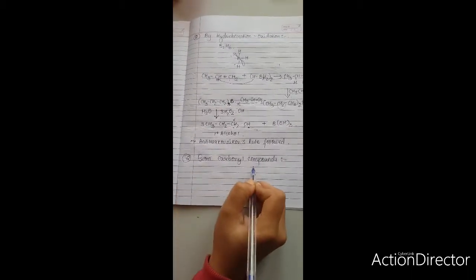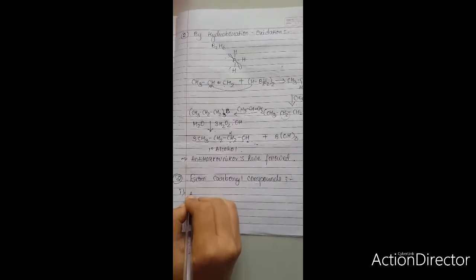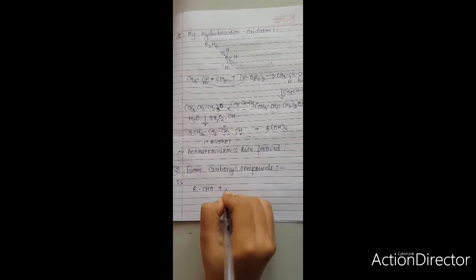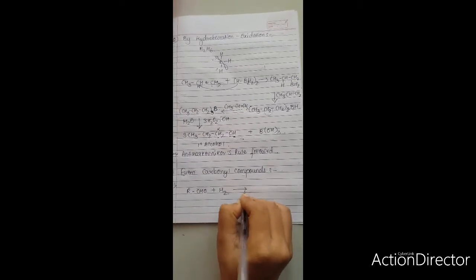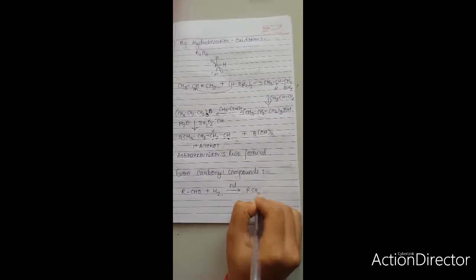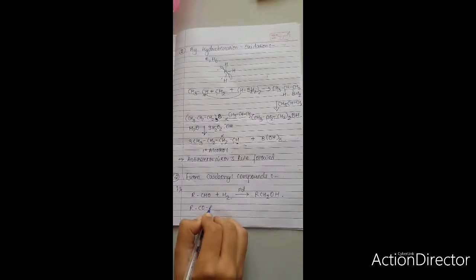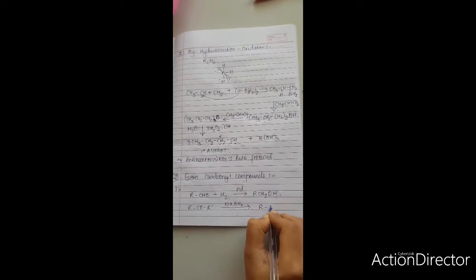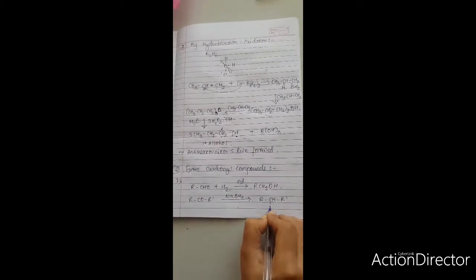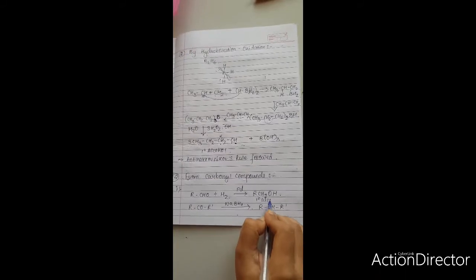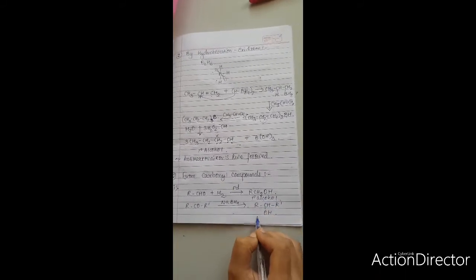The second method is from carbonyl compounds — first by reduction of aldehydes and ketones. For an aldehyde, we use palladium as catalyst and get RCH₂OH, a primary alcohol. For a ketone, the catalyst used is NaBH₄ and you get a secondary alcohol.